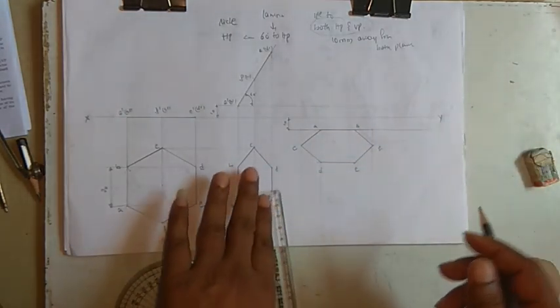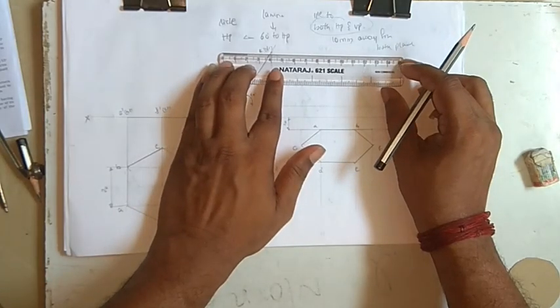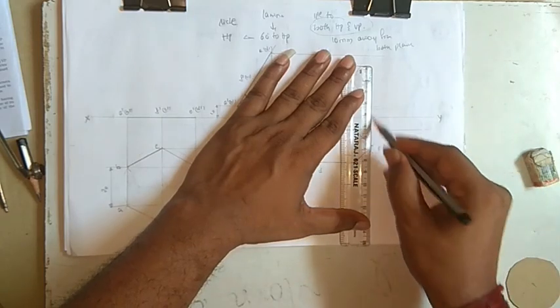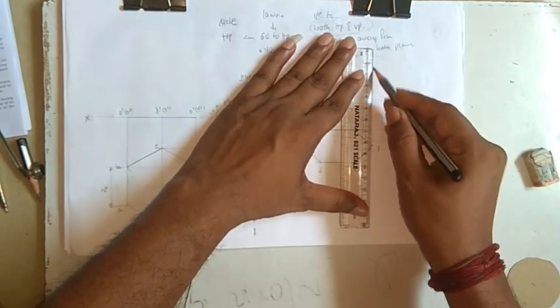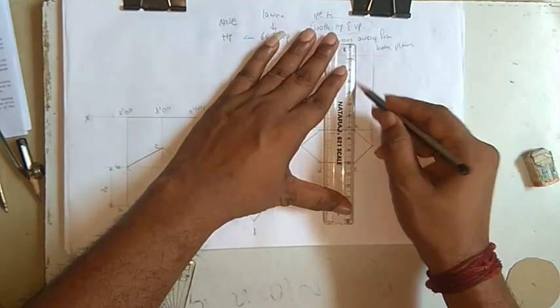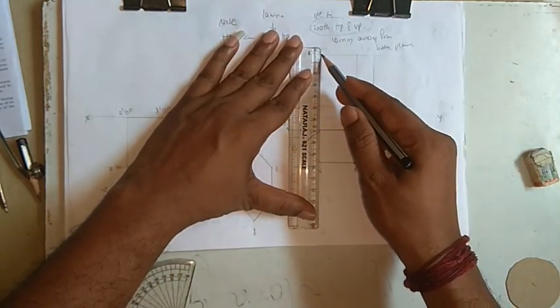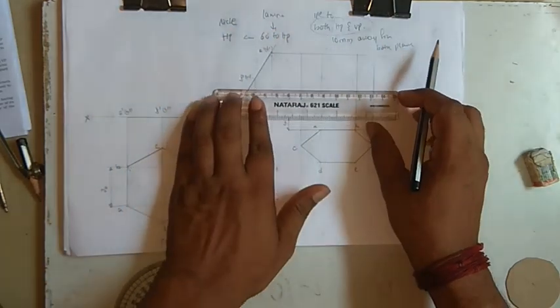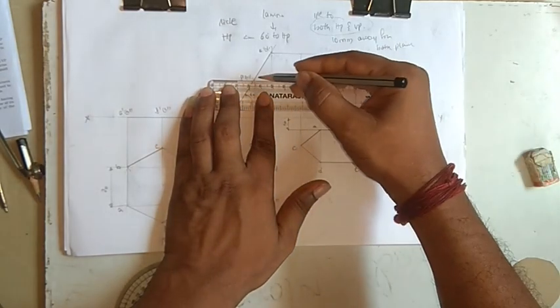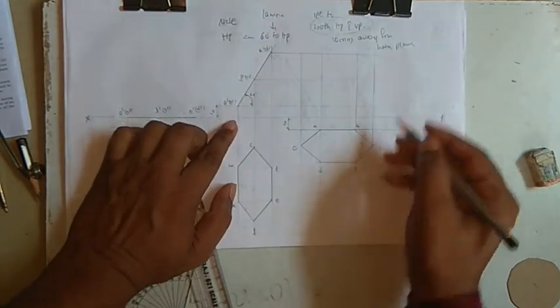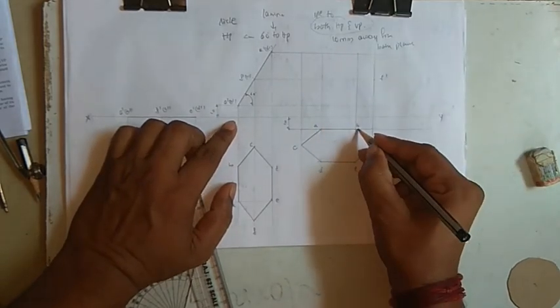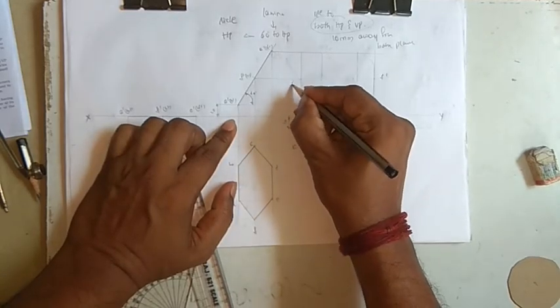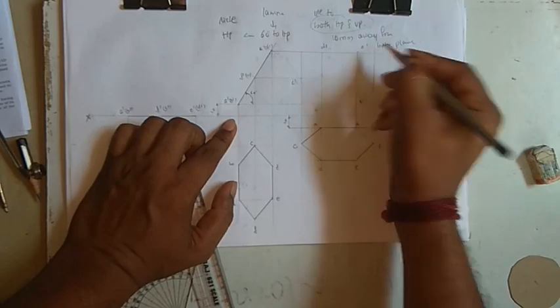Once this is done, take the projection of the topmost point - this is F. Now F is your F', B is your B', A', this is C', this is D', this is E'.